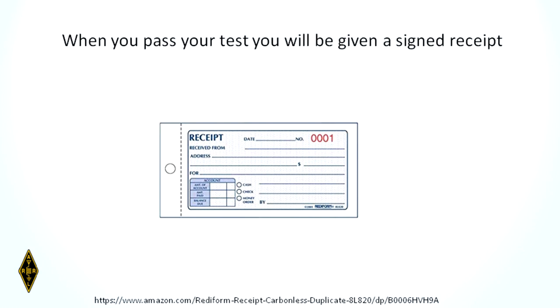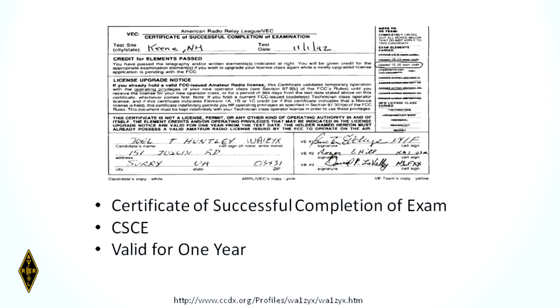When you pass your test, you'll be given a receipt called the Certificate of Successful Completion of Exam. This had more force back in the days of Morse code, where sometimes people would pass the Morse code exam but not the written, or vice versa — so they had up to a year to pass the other requirement. The receipt is good for one year. At the moment, it's just a proof that you passed the test.